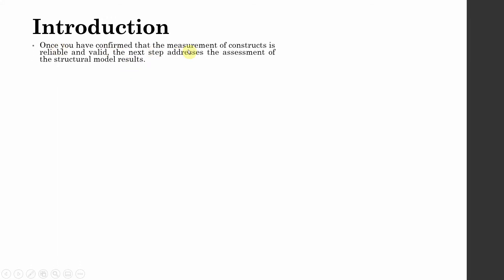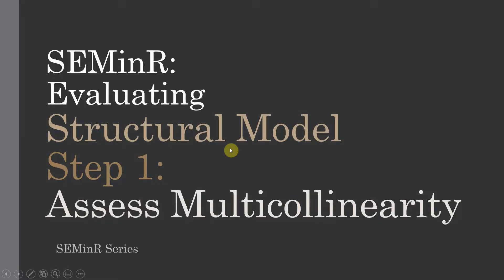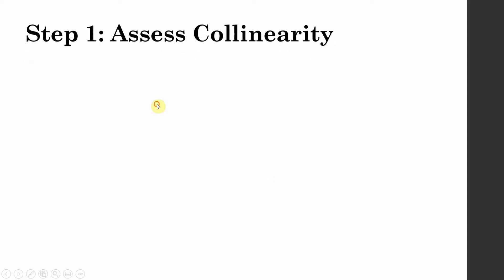Once you have confirmed that the measurement of constructs is reliable and valid, the next step addresses the assessment of structural model results. Step one: we assess the collinearity issues in the structural model. The first step is multicollinearity — how do we assess multicollinearity?